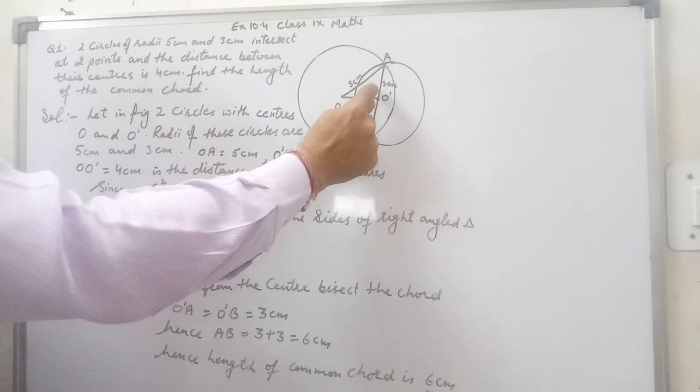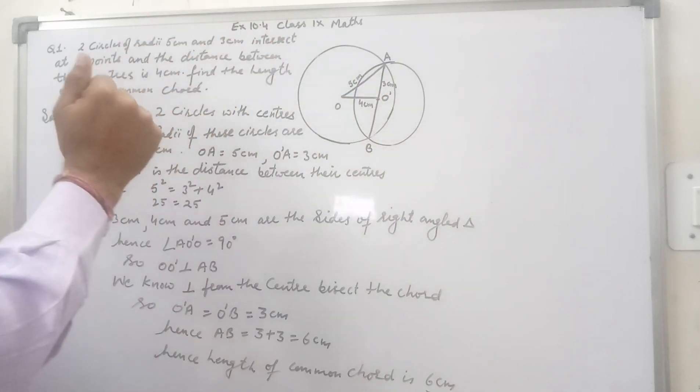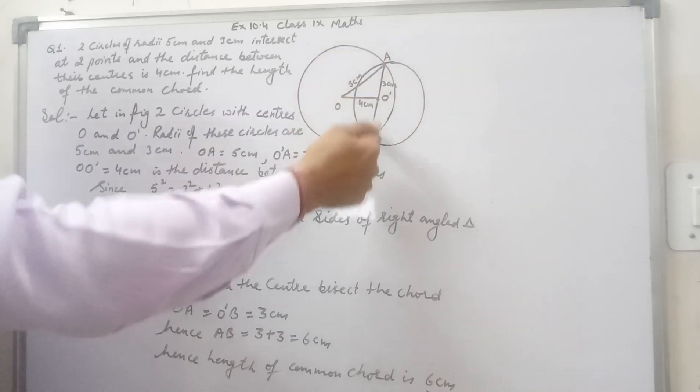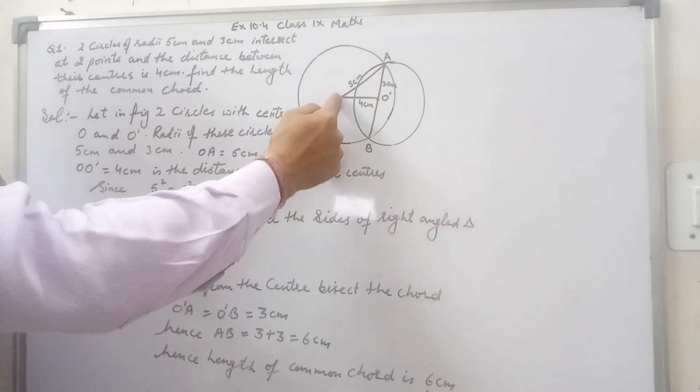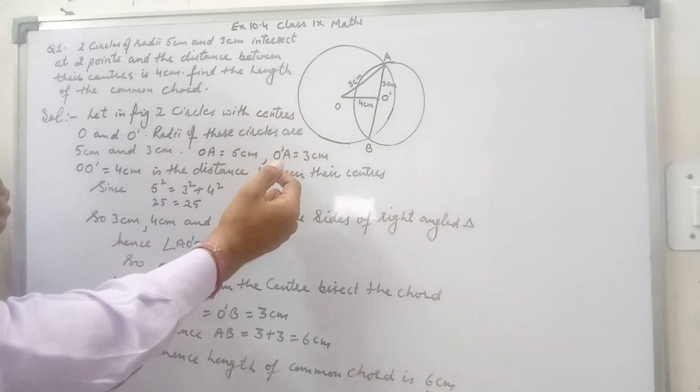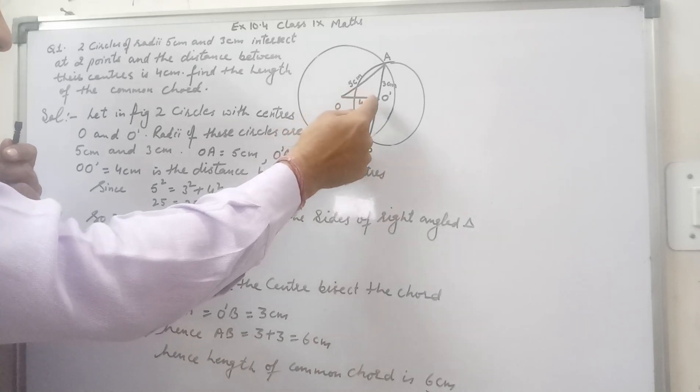Angle O dash that is angle A O dash O is 90 degree. You can say O O dash is perpendicular on AB. O O dash line segment is perpendicular on AB.